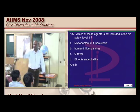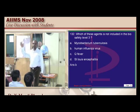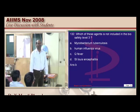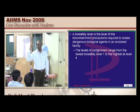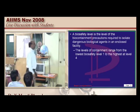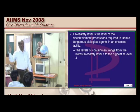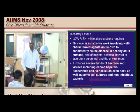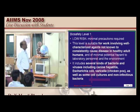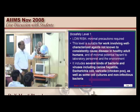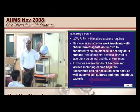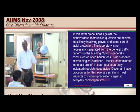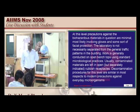Biosafety levels 1 to 4: biosafety level 1 means very low-risk infectious conditions where minimal precautions are required. E. coli, chickenpox, hepatitis, general bacteria like streptococcus, and general viruses are examples of biosafety level 1.